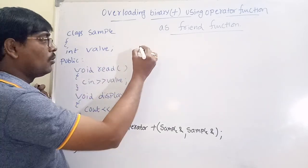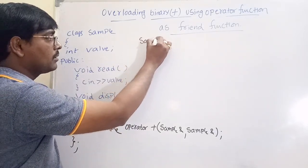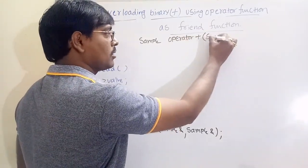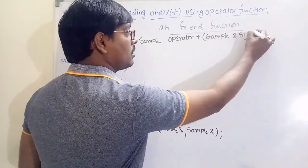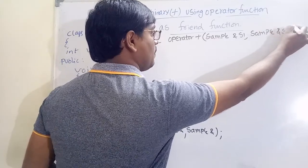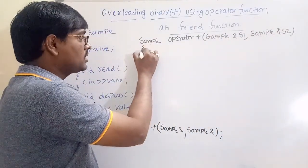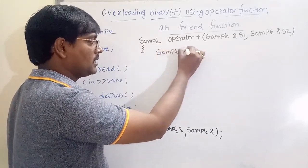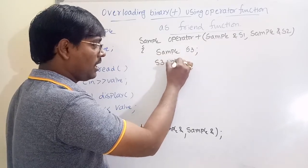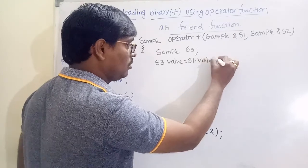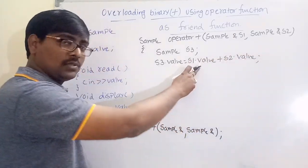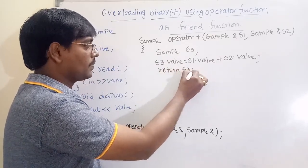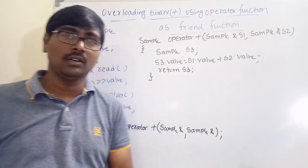Now we define the operator function outside the class: sample operator+(sample s1, sample s2). We pass two objects as arguments. Inside, we declare an object s3 of type sample. Then: s3.value = s1.value + s2.value — the value of s1 plus the value of s2 is stored in s3. Finally, we return s3.